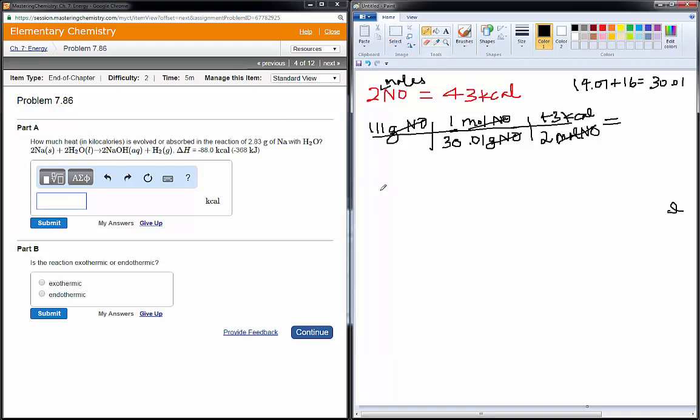So, starting with what they give us here. We have 2.83 grams sodium. According to the periodic table, sodium weighs 22.98 grams, one mole. And we can see, as this equation is written, 2 moles of sodium releases 88 kcals of heat. So, 2 moles of sodium on the bottom, 88 kcals on the top.